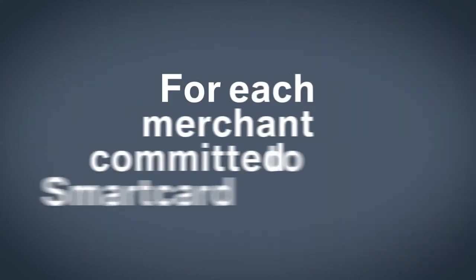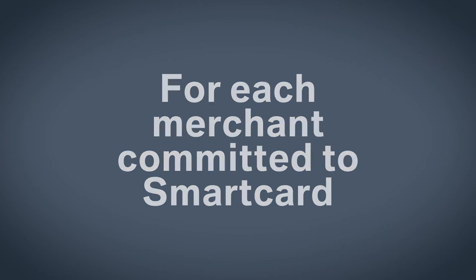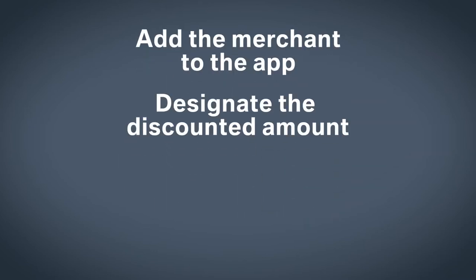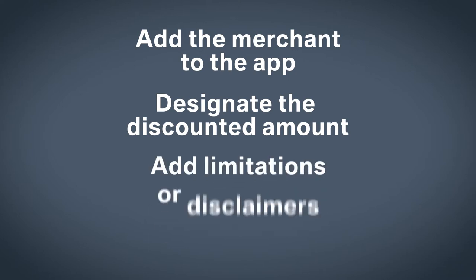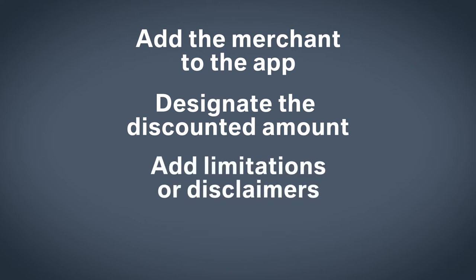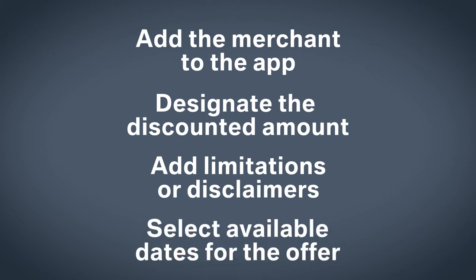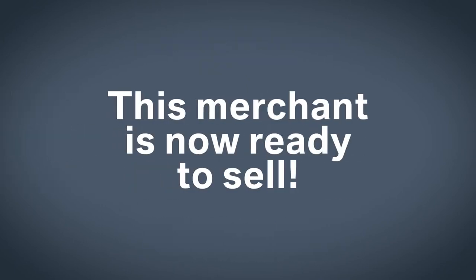For each merchant submitted to SmartCard, you add the merchant to the app, designate the discounted amount — usually based on the popularity of the merchant — add any limitations or disclaimers for the offer, such as can't be used for alcohol, and select available dates that the merchant participates with SmartCard. Now the merchant is ready to sell.